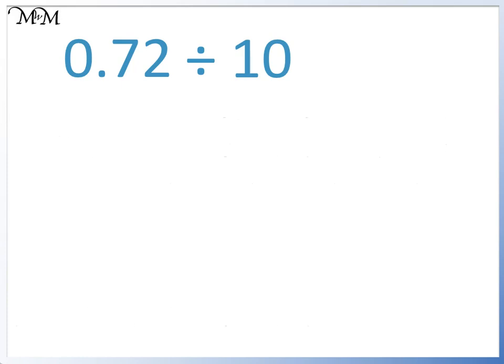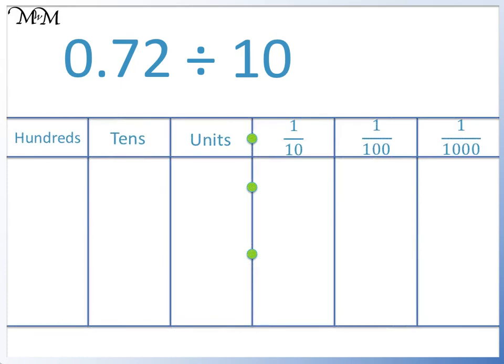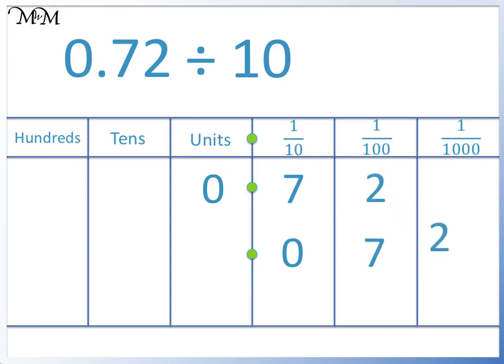0.72 divided by 10. We start by writing 0.72 on our place value grid. We are dividing by 10, so we are moving each digit one place to the right. We move the 0 to the tenths column, we move the 7 to the hundredths column, and we move the 2 to the thousandths column. We don't have any digits in front of the decimal point, so we put a zero in the units column. The number we have is 0.072. So 0.72 divided by 10 equals 0.072.